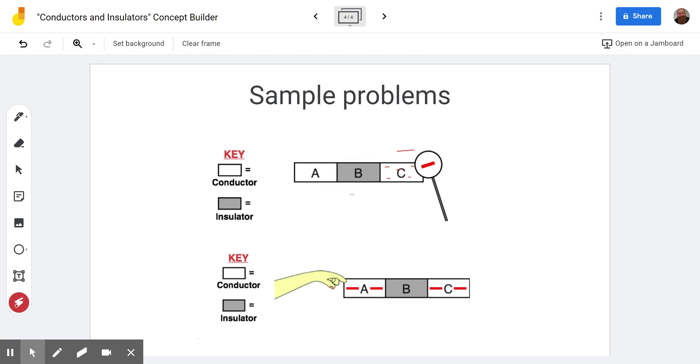They can't move through B because B just holds on to them, and so they can't move through there. And since they can't move through B, they can't get to A. So in this case, A would be neutral, B would be neutral, and as we talked about, C would be negative.